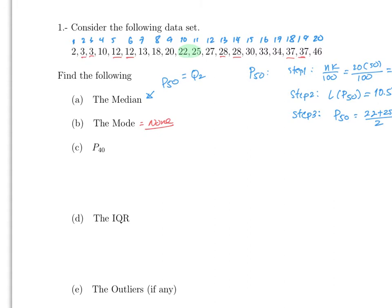Now let's do P40, same process. Step one: n is still 20, but now k is 40. So we compute 20 times 40 over 100 using a calculator. That equals 8, which is a whole number.